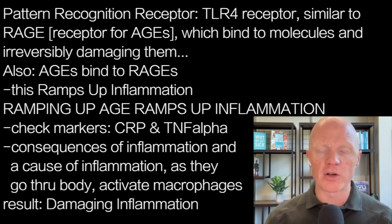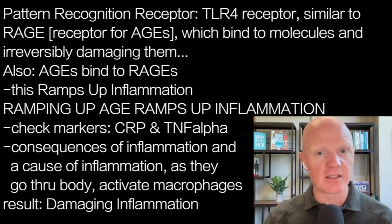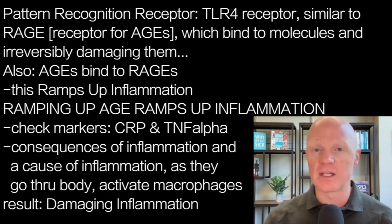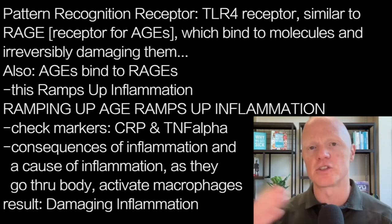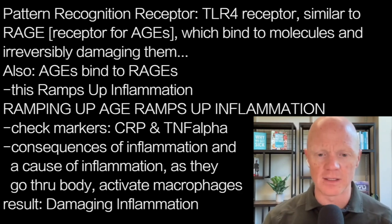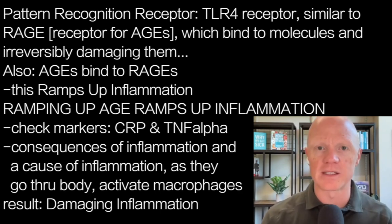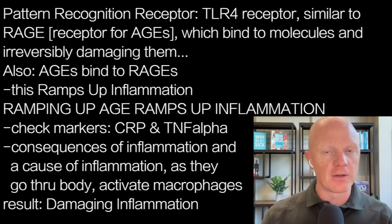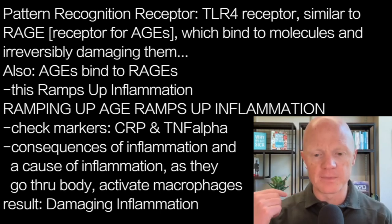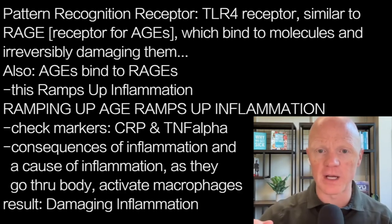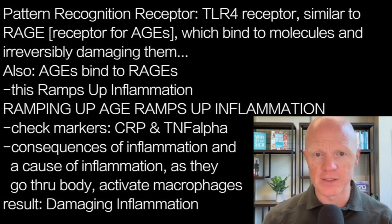If you look at markers of inflammation like C-reactive protein, which more and more people get measured, or TNF-alpha, many of the interleukins, or interferon — like interferon gamma — all of these, and there are dozens we could list, are molecules that are both a consequence of inflammation being turned on and a cause, because as they start spreading through the body they activate other immune cells like macrophages.